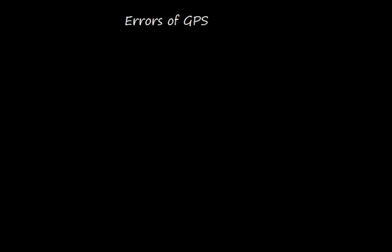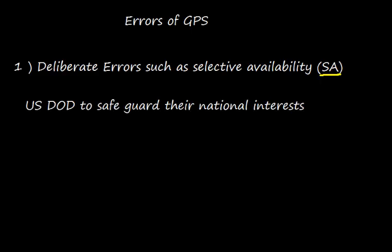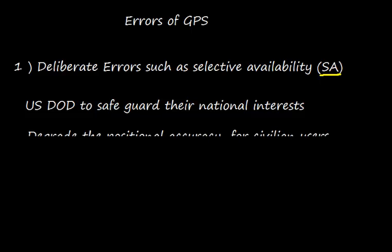Broadly, errors can be divided into two categories. The first is introduced by the US Department of Defense — these are deliberate errors such as Selective Availability, or simply known as SA. These errors were introduced to safeguard national interests, causing a degradation in positional accuracy for civilian users. From May 2001, the US government switched off Selective Availability.